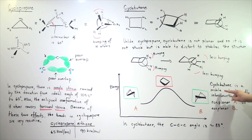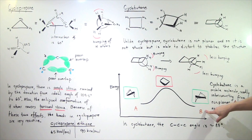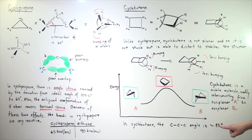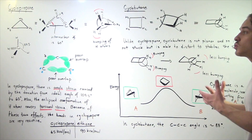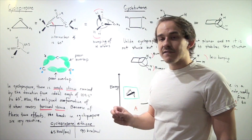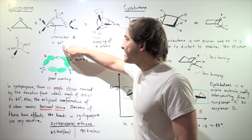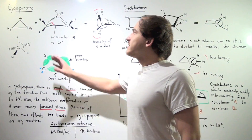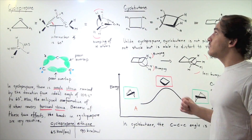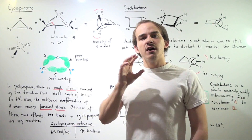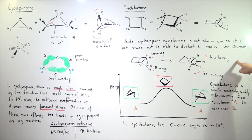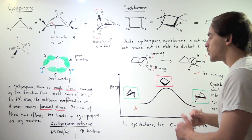Cyclobutane is a mobile molecule, readily interconverting from nonplanar conformation A through the planar intermediate to nonplanar conformation B. The carbon-carbon-carbon angle in cyclobutane is approximately 88°, which is much closer to the ideal 109.5° compared to cyclopropane's 60°. This means cyclobutane is lower in energy and more stable than cyclopropane. Because cyclobutane has one extra carbon, it can distort to reduce H-atom bumping.